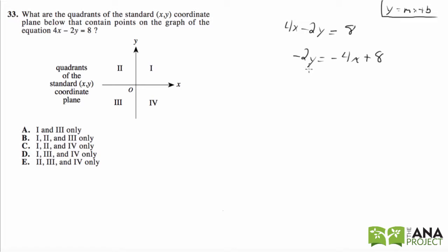Subtract 4x from both sides, and then let's divide. This is negative 2y, so we're going to divide by negative 2. Divide by negative 2 here.